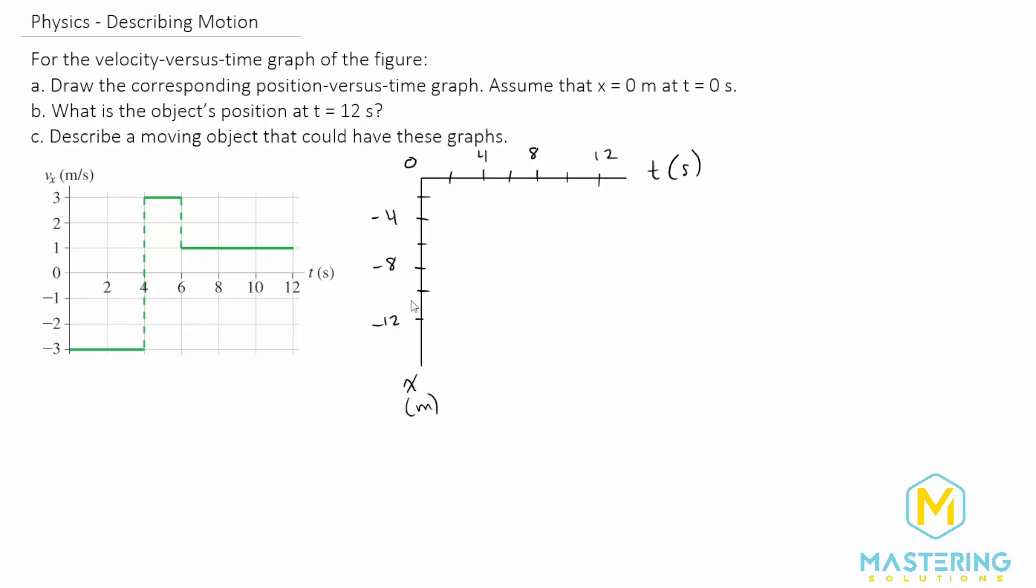Welcome to Mastering Solutions. In this motion problem, they want us to go from this velocity versus time graph and to make a position versus time graph. And then they ask us what's the position at the time of 12 seconds, and then they want us to come up with some kind of a description to explain the situation.